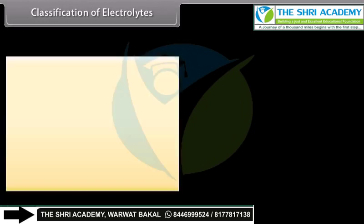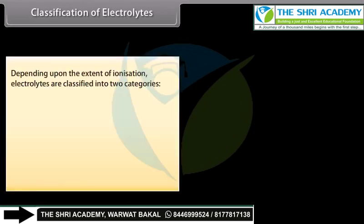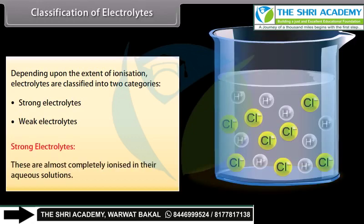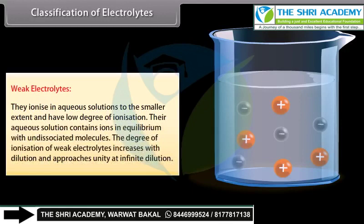Classification of Electrolytes: Depending on the extent of ionization, electrolytes are classified into strong and weak electrolytes. Strong electrolytes are almost completely ionized in aqueous solutions (e.g., HCl, NaOH, KCl). Weak electrolytes ionize to a smaller extent with a low degree of ionization; their solutions contain ions in equilibrium with undissociated molecules. The degree of ionization of weak electrolytes increases with dilution, approaching unity at infinite dilution (e.g., NH₄OH and CH₃COOH).